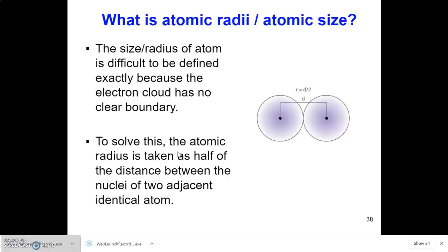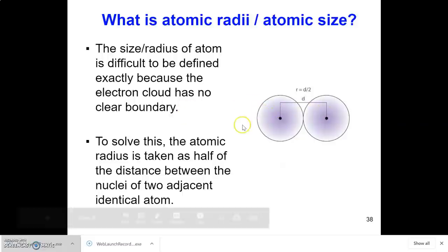What is atomic radius or atomic size? The size or radius of an atom is difficult to define exactly, because the electron cloud has no exact clear boundary. To solve this, the atomic radius is taken as half of the distance between the nuclei of the two adjacent identical atoms.